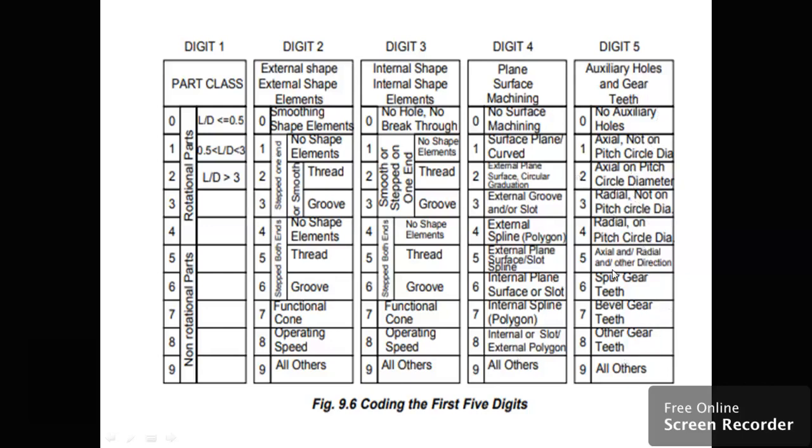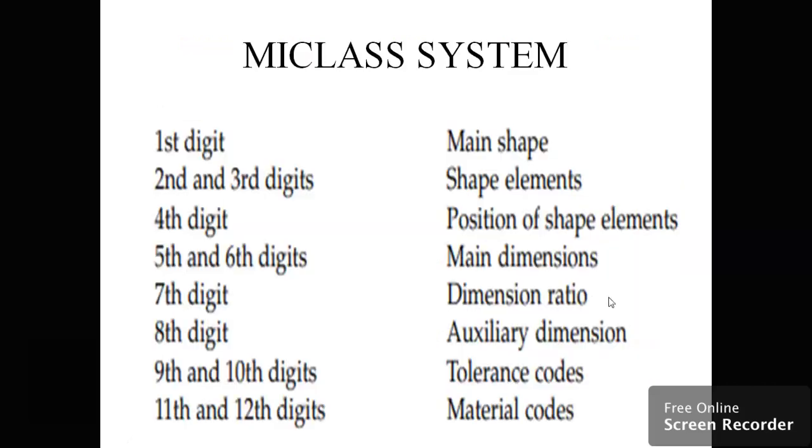The MICLASS system uses 11 to 12 digits. The first digit is main shape, second and third digits are shape elements, fourth digit is position of shape elements, fifth and sixth digits are main dimensions, seventh digit is dimension ratio, eighth digit is auxiliary dimension, ninth and tenth digits are tolerance codes, and eleventh and twelfth digits are material codes.